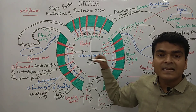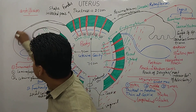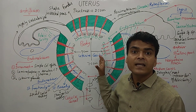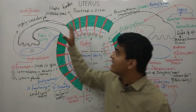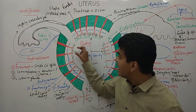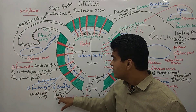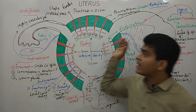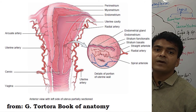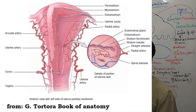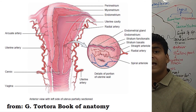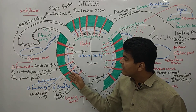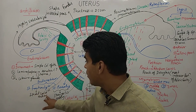The endometrium is highly vascularized because this portion supports fetal and baby growth. The blood supply comes from the iliac artery, which branches into the uterine artery, then the arcuate artery, then the radial artery, which further branches into spiral coiled arteries and straight arteries that enter the endometrium.